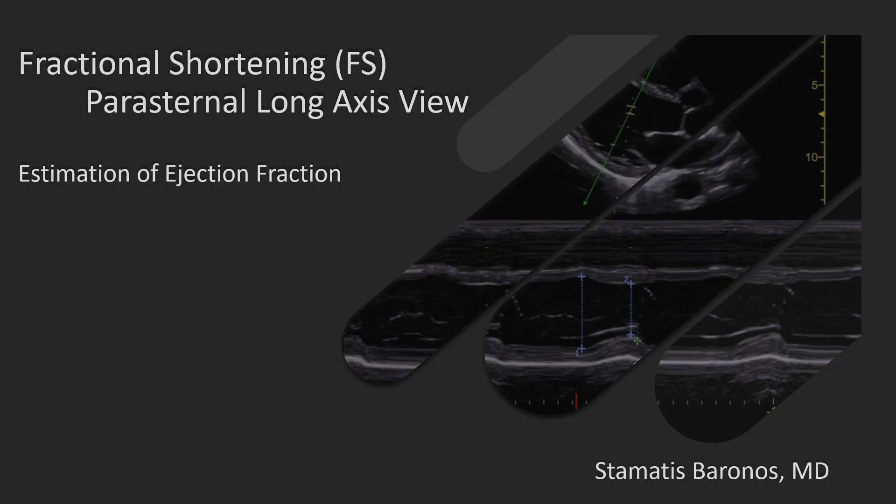Hello and welcome back to the ICU Doc. This is Tomárez Baranos and here's another lecture on perioperative and critical care transthoracic echo. In today's presentation we will talk about the fractional shortening, which is a method to estimate the global left ventricular ejection fraction, how to acquire the view, and how to make the measurements.